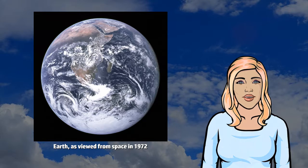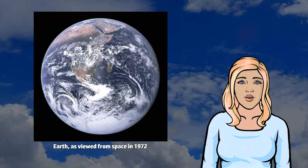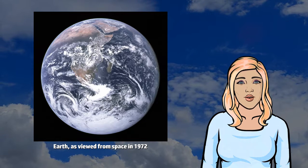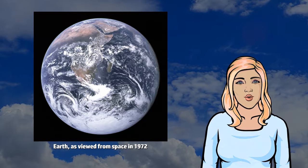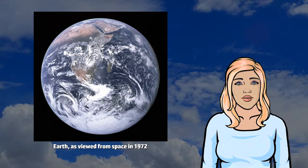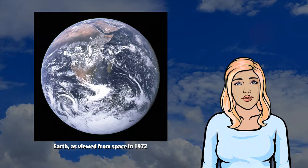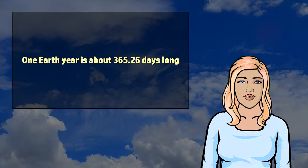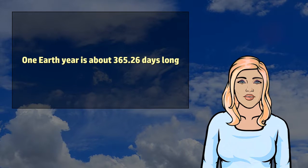Earth's gravity interacts with other objects in space, especially the Sun and the Moon, Earth's only natural satellite. During one orbit around the Sun, Earth rotates about its axis about 365.26 times, thus an Earth year is about 365.26 days long.